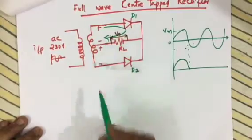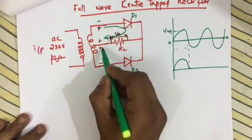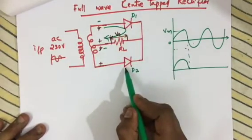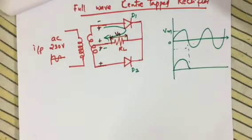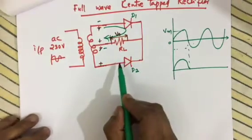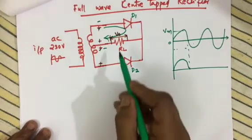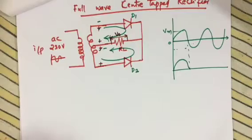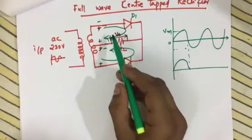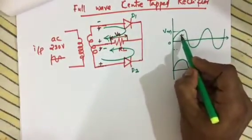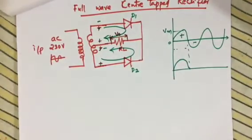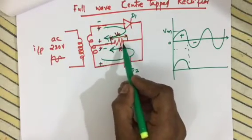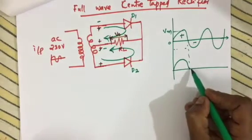During the negative half cycle, the centre tap transformer reverses polarity — the upper terminal becomes negative and lower becomes positive. Now D2 is forward biased and D1 is reverse biased. D2 conducts and current flows through RL. Importantly, in both half cycles the current through RL flows in the same direction — from left to right — giving a full wave output.